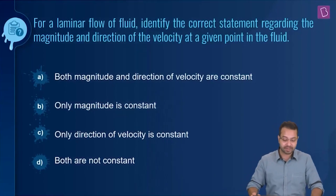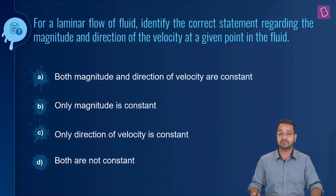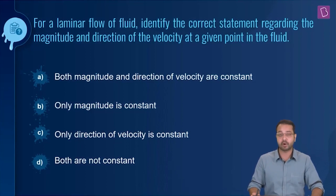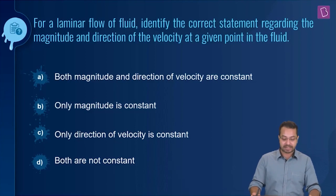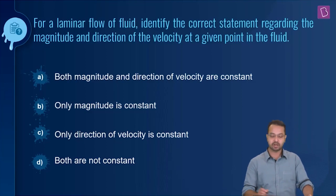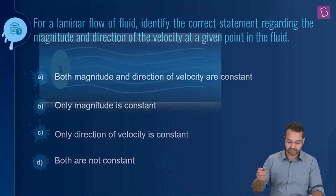The question is: for a laminar flow of fluid, identify the correct statement regarding the magnitude and direction of velocity at a given point in the fluid. The options are: both the magnitude and direction of velocity are constant; only magnitude is constant; only direction of velocity is constant; or both are not constant.